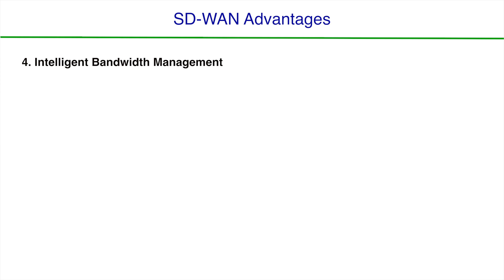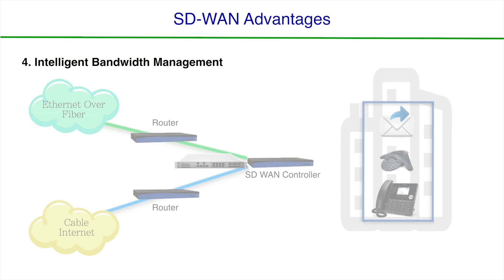Benefit number four, intelligent bandwidth management. Because SD-WAN service can pool together separate providers under one device, there are even more benefits. IT staff no longer needs to program redundant routes on firewalls or gateway devices. You no longer have to worry about programming or providing things like BGP. This is all taken care of by your SD-WAN device and your SD-WAN provider.